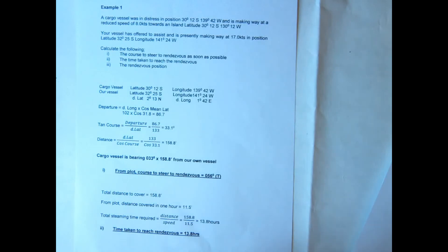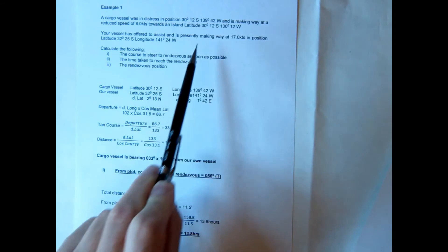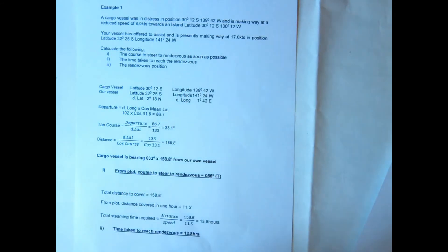Notice that the latitudes are the same, so in effect that's giving us the course that the cargo vessel is making. And it's at 139, 42 west, reducing the westerly longitude, so it's going in an easterly direction, due east.